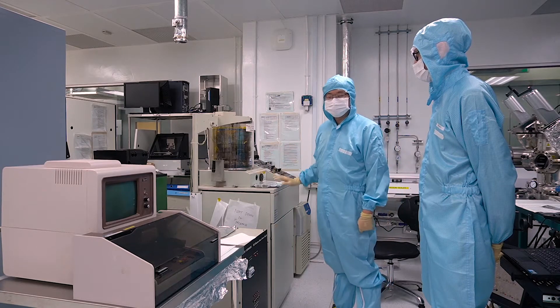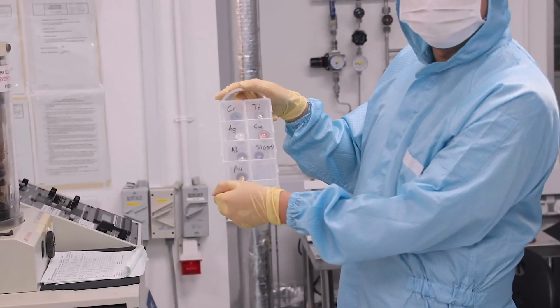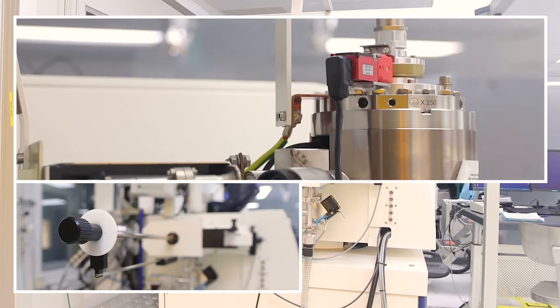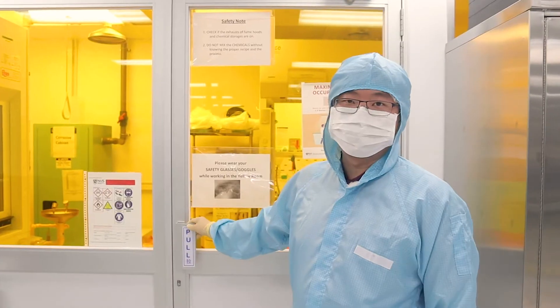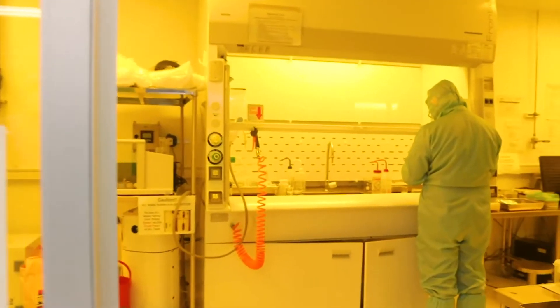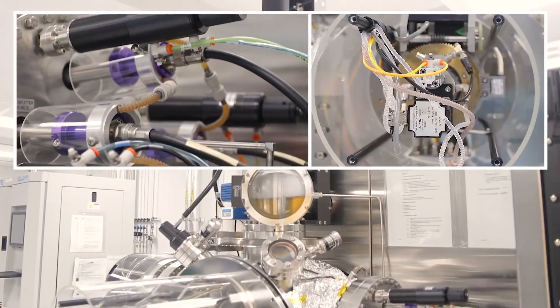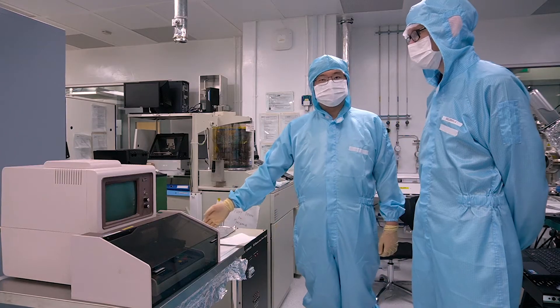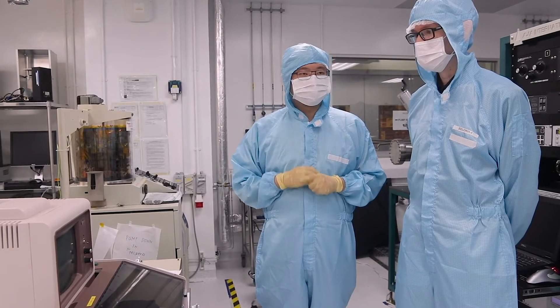This machine you see here is our metal evaporator which we use to deposit electrical contacts like the one you see here. Next we have our electron beam lithography unit which we use to make really fine patterns. Next we have our yellow room which is our optical lithography room. The machine you see here is our ion miller which we use to etch structures on our chips. So finally we have our step profiler. We use the step profiler to measure the height of the structures that we etched.